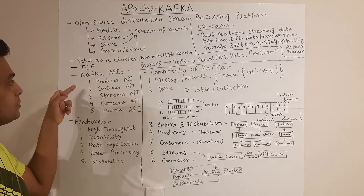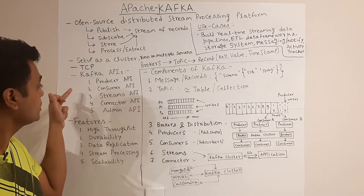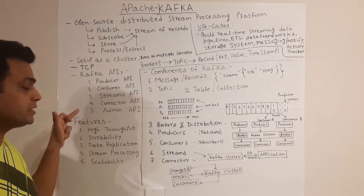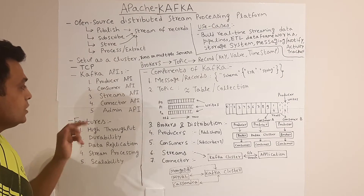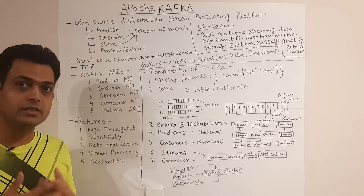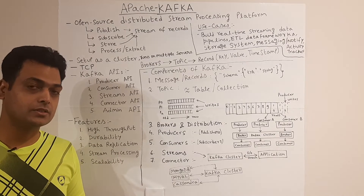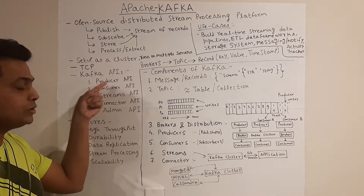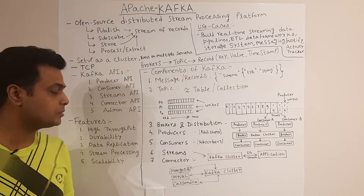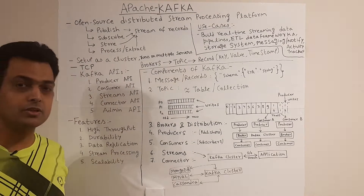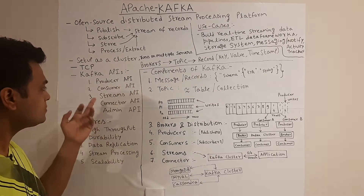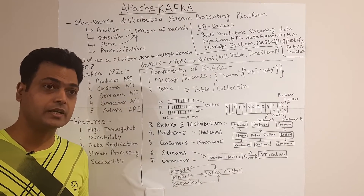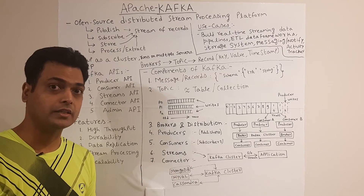Kafka provides multiple APIs using which you can configure it. It provides producers, consumers, stream APIs, connector APIs, and admin APIs. Admin APIs are basically used to configure various parameters, whereas you can use the producer API to produce content and the consumer API to consume records.